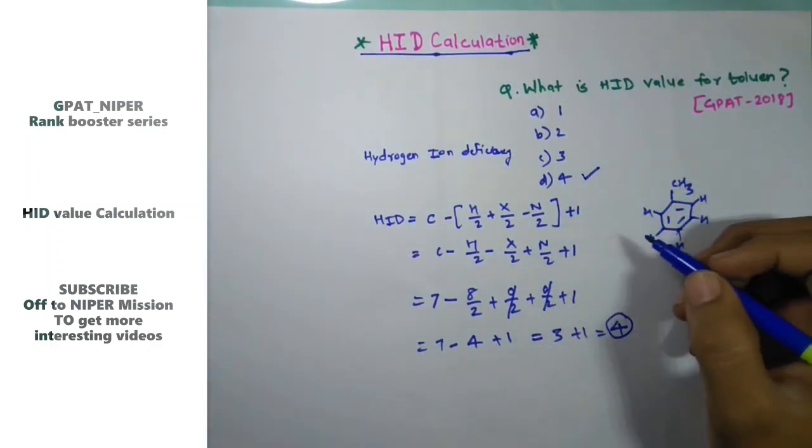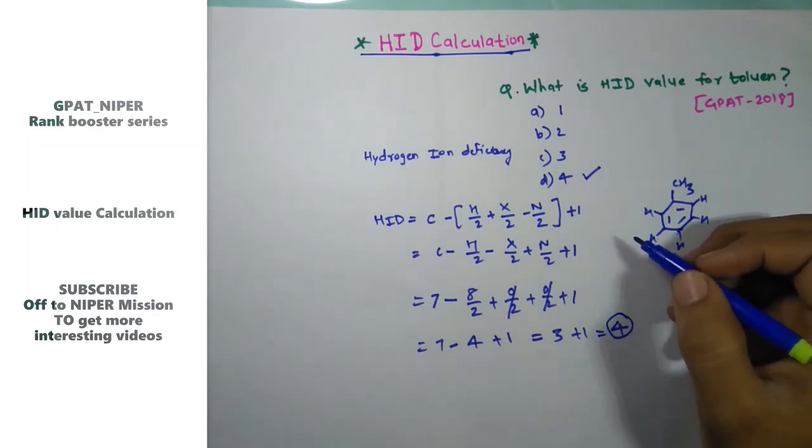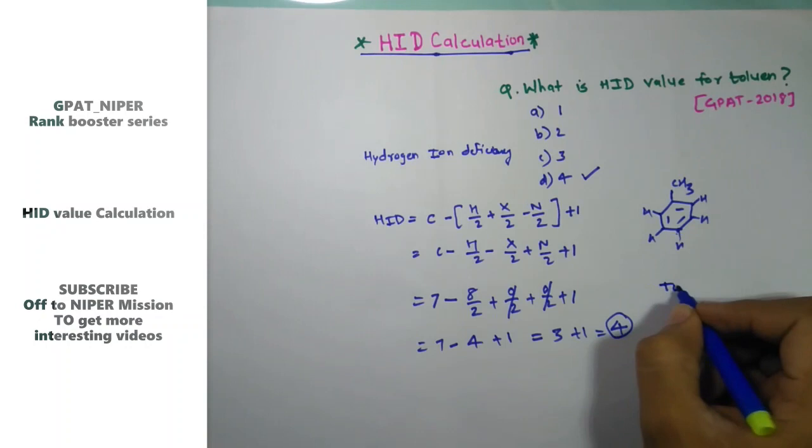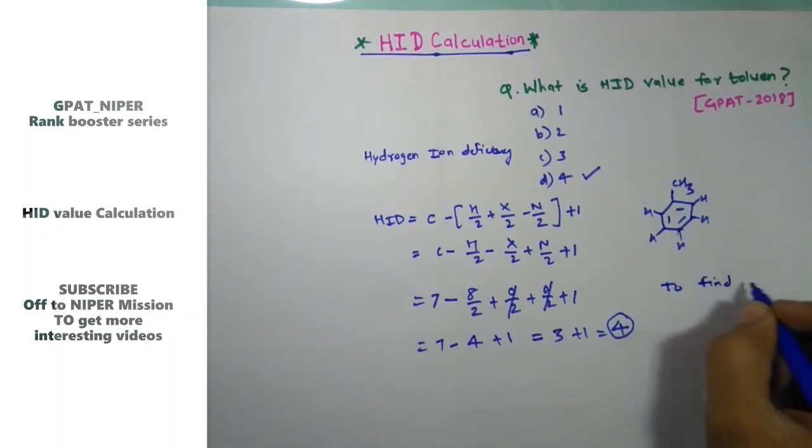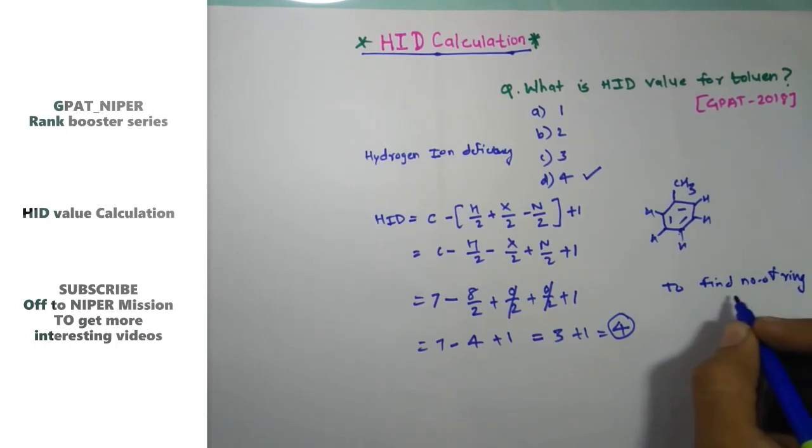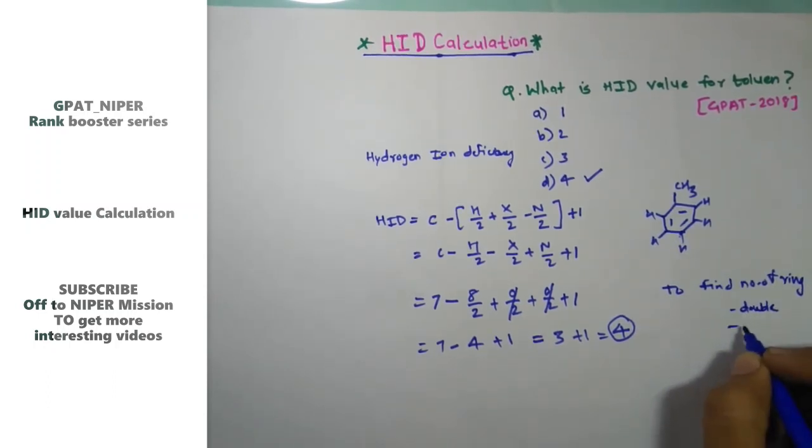This is very simple. The objective of HID calculation is to find the number of rings in the structure, the number of double bonds in the structure, or triple bonds in the structure.